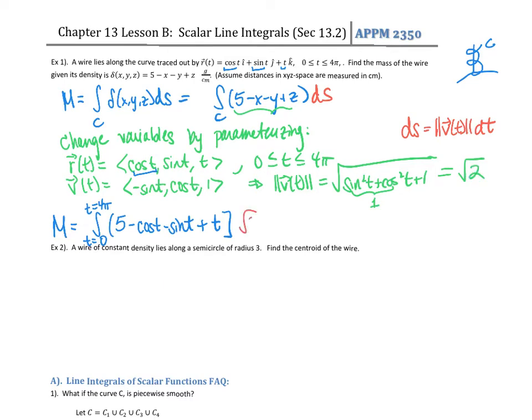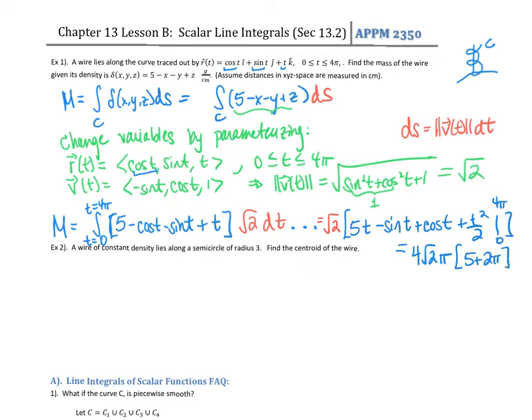So my ds is going to become square root of two dt. And then I can just go through and do this integral, and we will get 4√2π times (5 + 2π). And this would be in grams because we had said that its density was in grams per centimeter.